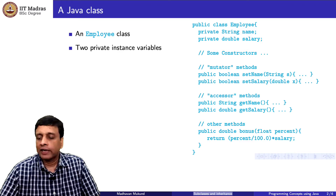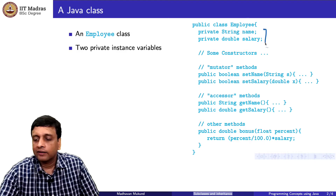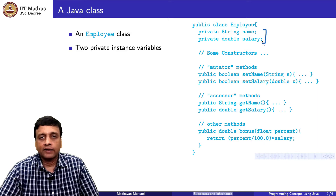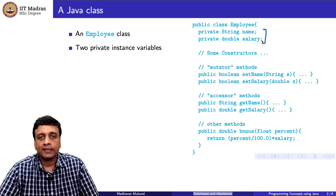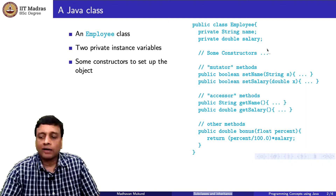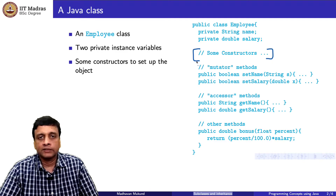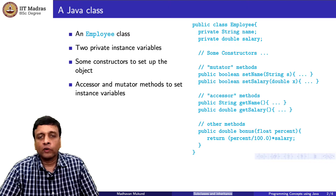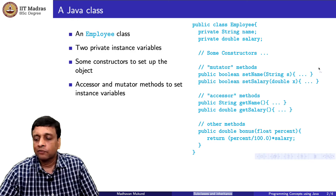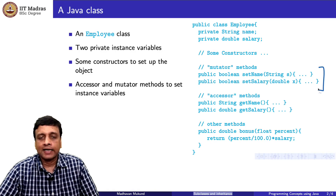In this Employee class, as usual, we will have some private variables. Here we have two private instance variables: one is name, which is a string, and the other is salary, which we store as a double. Then, as we saw last week, there will be some functions called implicitly when we create these objects — these are the constructors, which will set up an employee with some values for the name and the salary.